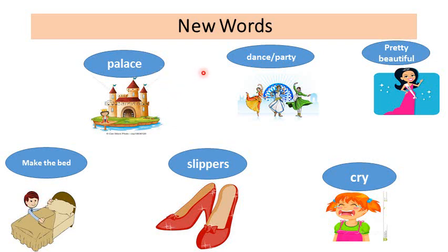Let's learn some new words together. Palace — the place where the king and prince live. Dance or party. Pretty means beautiful. Make the bed — after you get up, you make your bed. Slippers. Cry.